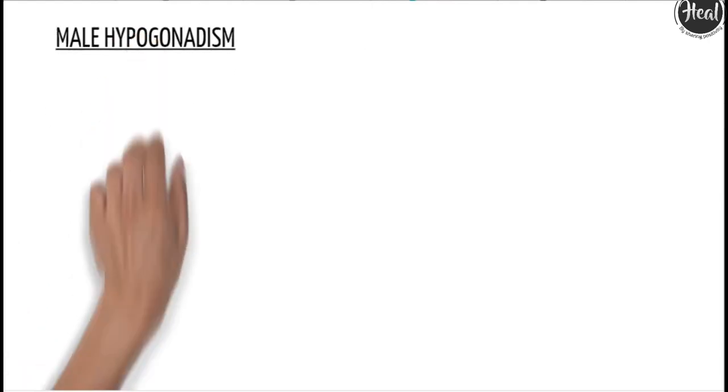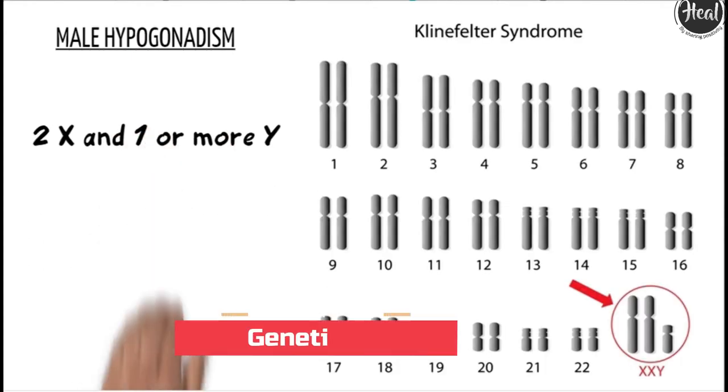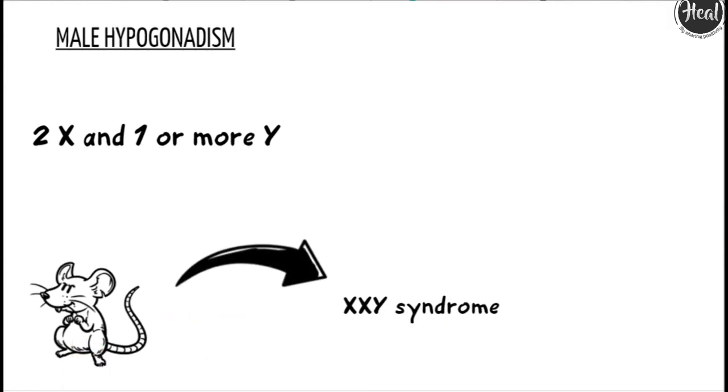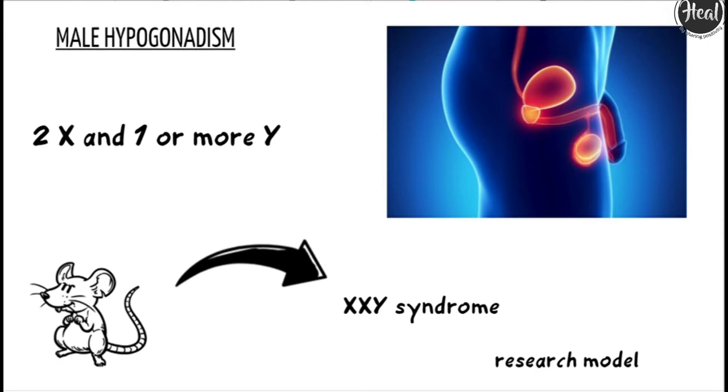Klinefelter syndrome is the most common cause of hypogonadism in males. It develops when there are at least two X chromosomes and one or more Y chromosomes. Mice can also have the XXY syndrome, making them a useful research model.